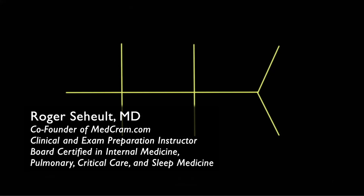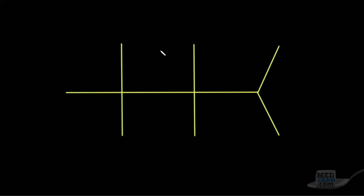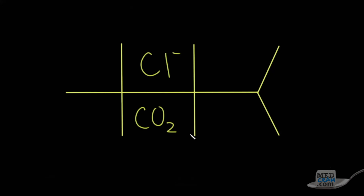Welcome to another MedCram video. We're going to talk more about the CHEM7, specifically the basic metabolic panel, and we're going to look at the chloride ion and also what we call the bicarbonate or CO2, as we've talked about in the last lectures.